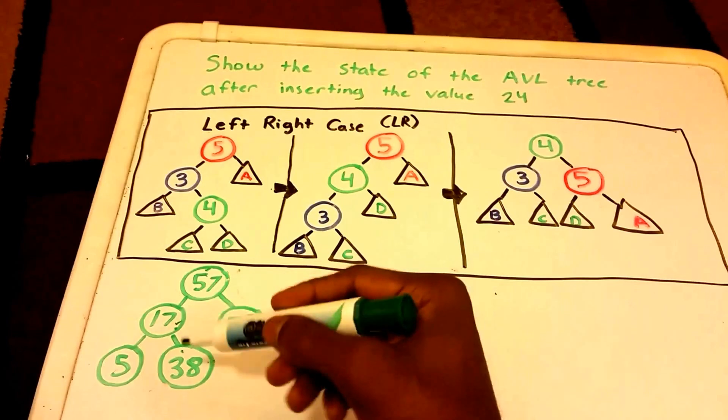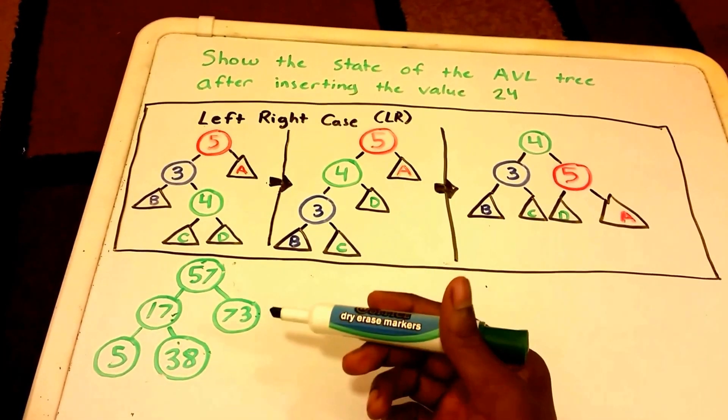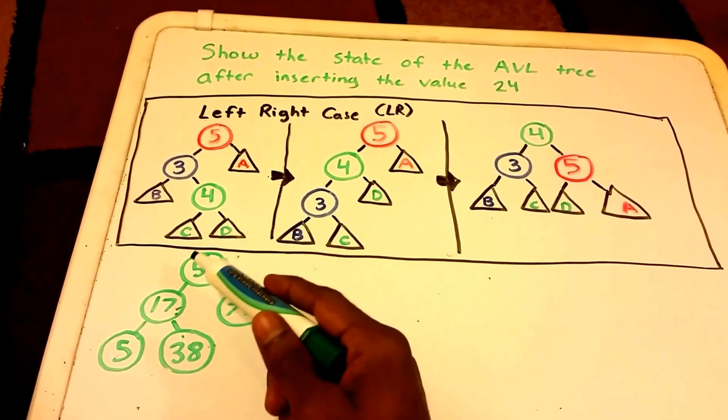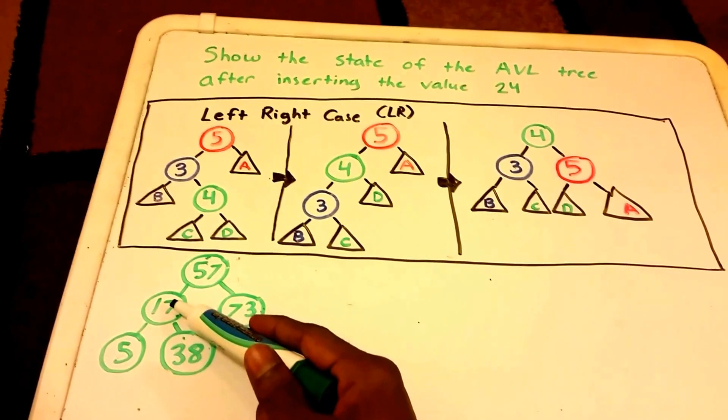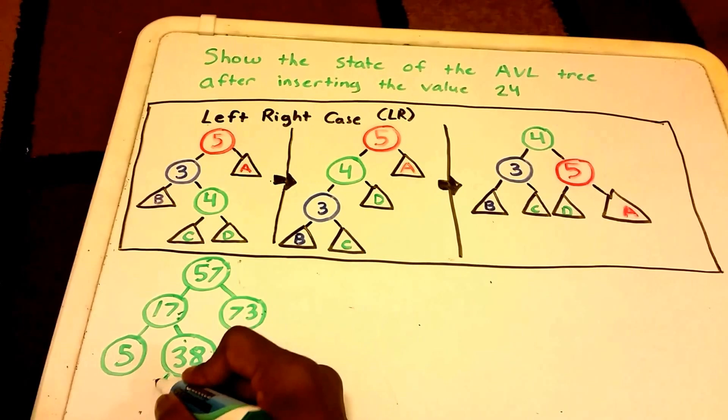Below here I have the AVL tree and want to insert the value 24. Let's remember that the AVL tree is just a binary search tree that's self-balancing. So to put 24 in here, we need to go to the left of 57, to the right of 17, and to the left of 38. So now we insert our value 24 here.